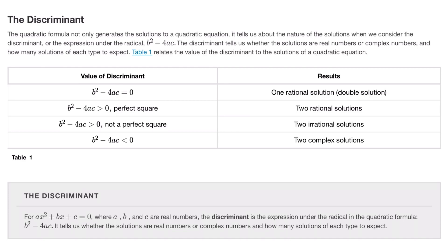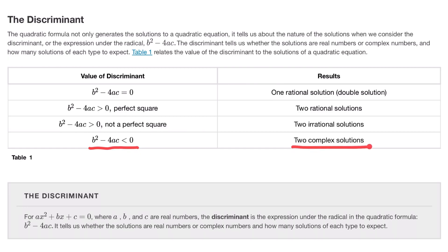Table 1 relates the discriminant to solutions: if the discriminant is zero, there is one rational solution (a double solution); if positive and a perfect square, two rational solutions; if positive but not a perfect square, two irrational solutions; if negative, two complex solutions. In our previous examples, the last one had a negative discriminant giving complex solutions, and the first had a positive non-perfect-square discriminant giving two irrational solutions.